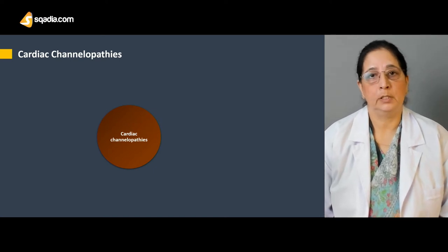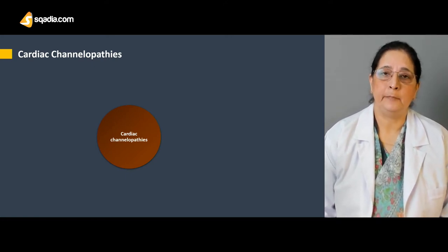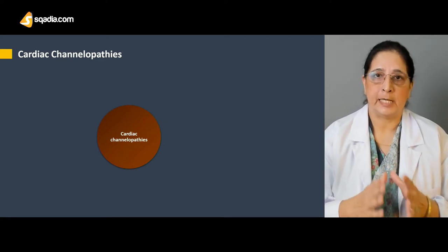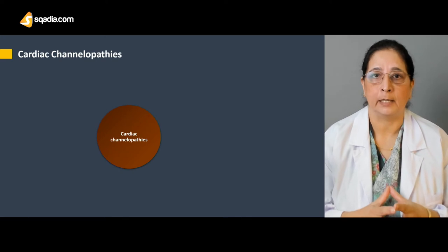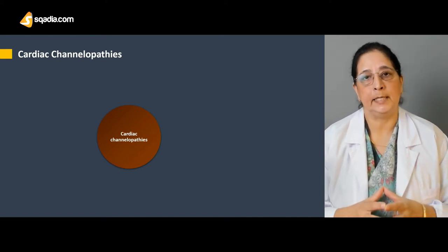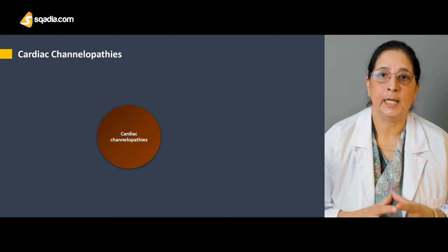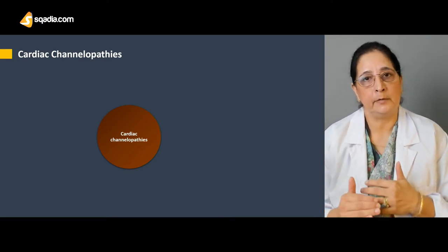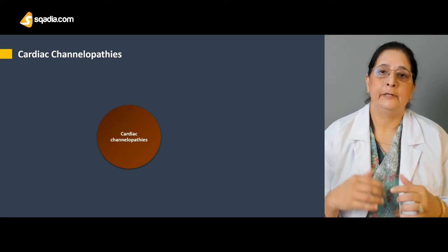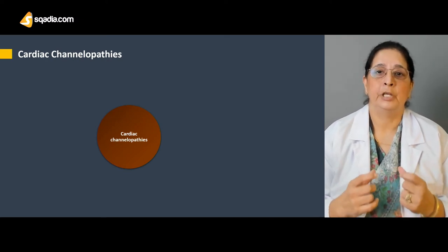Today we will discuss cardiac channelopathies. As the name shows, it deals with different channels — mainly sodium, potassium, and calcium channels in the heart. Cardiac channelopathies are mainly due to abnormalities in the proteins of the cells responsible for generating an impulse. That impulse, once generated, is transferred to the muscles of the heart or myocardium, creating electrical activity that generates the heartbeat.